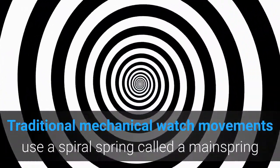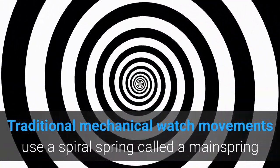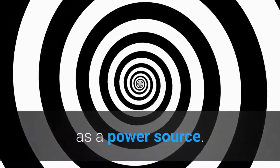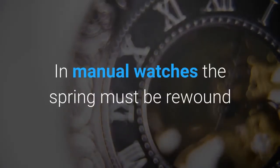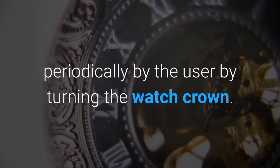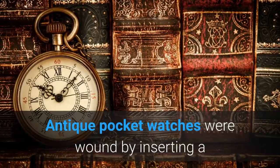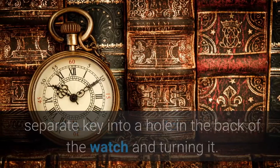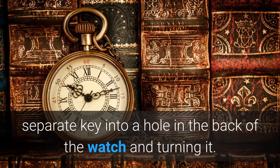Traditional mechanical watch movements use a spiral spring called a mainspring as a power source. In manual watches, the spring must be rewound periodically by the user by turning the watch crown. Antique pocket watches were wound by inserting a separate key into a hole in the back of the watch and turning it.